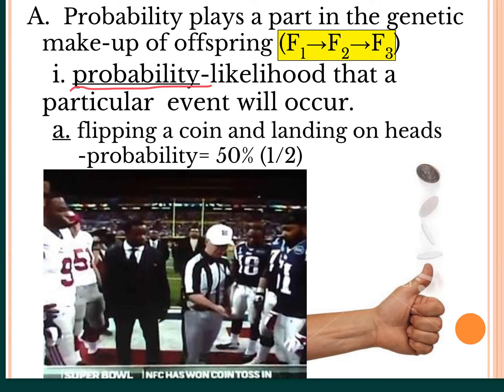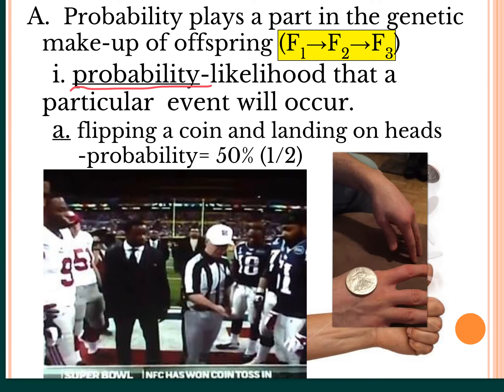And of course, probability is the likelihood that a particular event will occur. So just to give you an example, flipping a coin and landing on heads, the probability of that is 50%. Now, if you were to flip that coin a second time, let's say you got heads in the first one, does that mean the second time you'll definitely get tails? No, you still have a 50% chance of getting heads a second time. So let's take a look at this in real time.